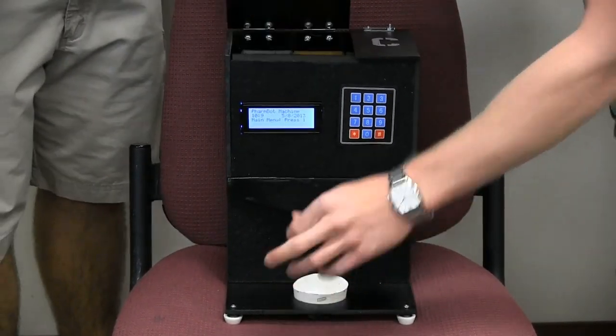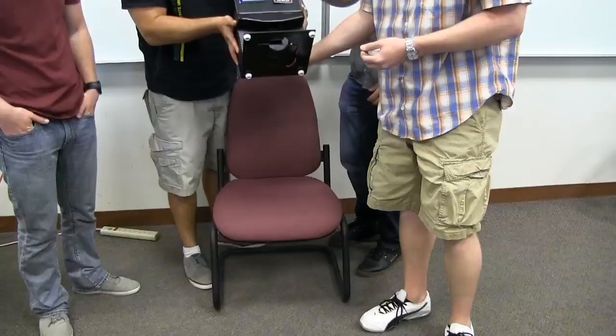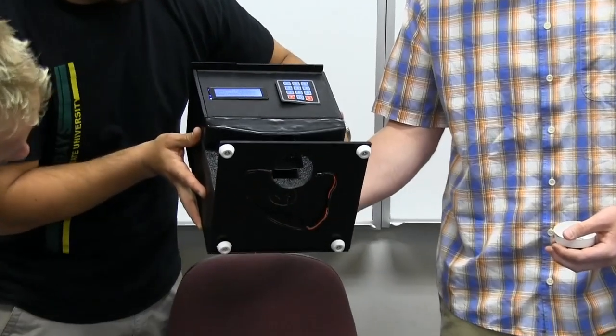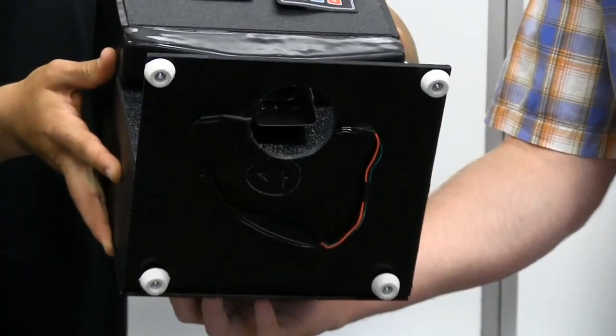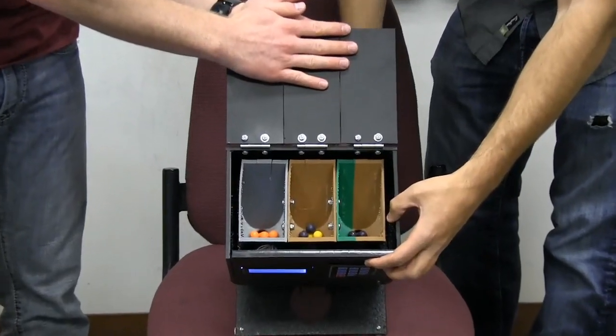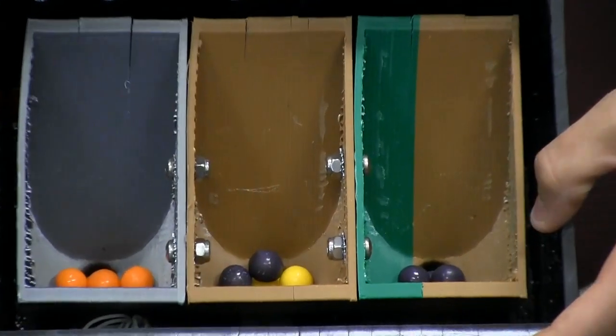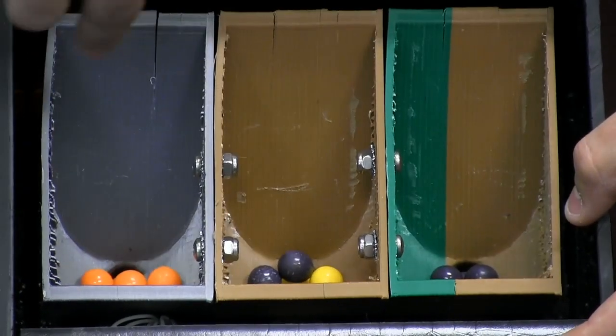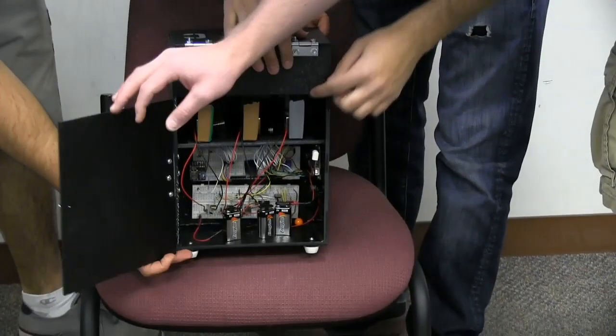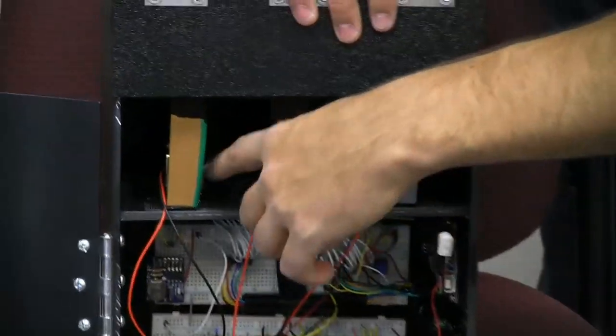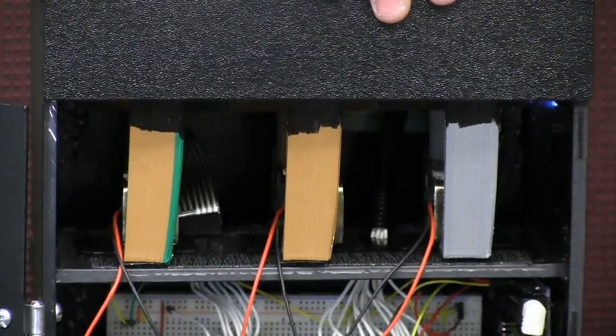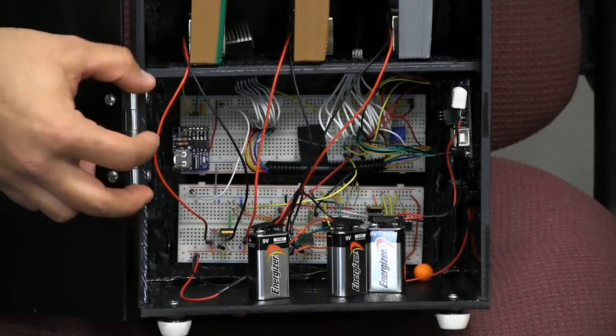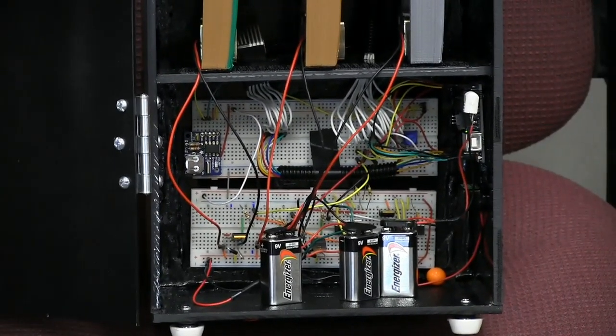We got three 3D printed silos that we custom designed to fit the solenoids. Directly under those silos, there's three solenoids that push the pills out. Back here you can see the three solenoids. We just have all our wiring in a back panel there. It's only run off of three 9-volt batteries. Two are in series to power the solenoids, and one is to power the Arduino and the buzzer.